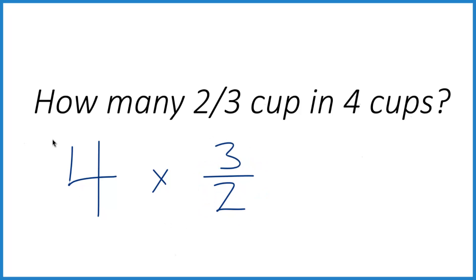And now when we multiply, often it's easier to take the four and then call that four over one. Because four divided by one is still four, but now everything lines up.